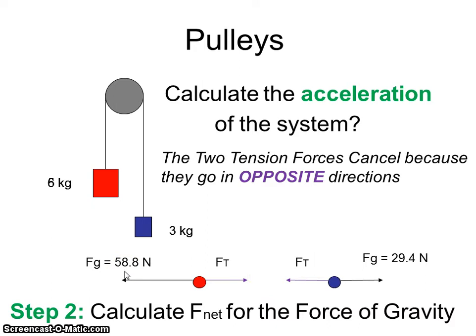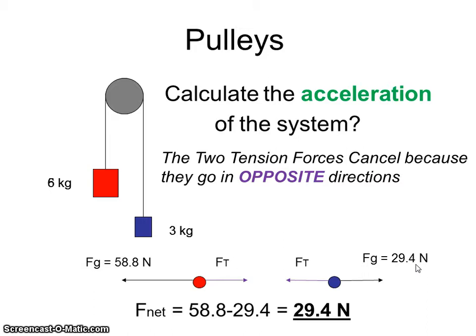How do we deal with forces going in opposite directions? We subtract them. If we subtract the two, the net force is 29.4. Now, I want to be careful. It's not 29.4 because this guy is 29.4. It's 29.4 because that's the difference between these two FGs. The difference in the two FGs is the net force. That's the F in the F equals M times A.